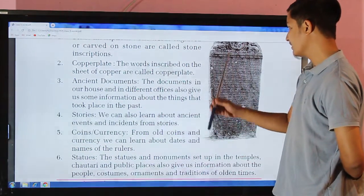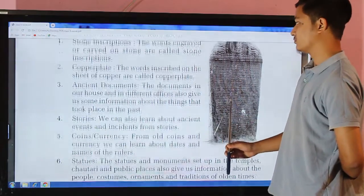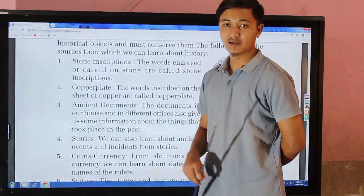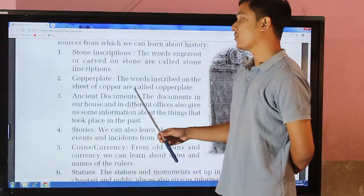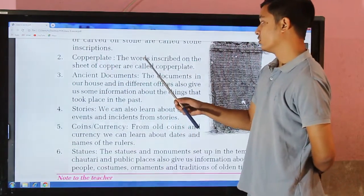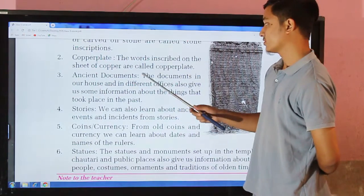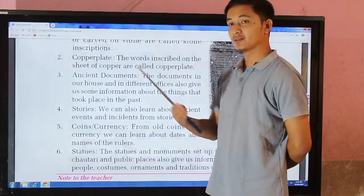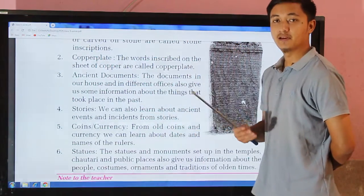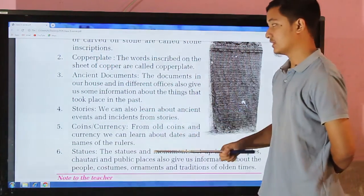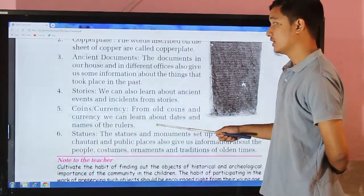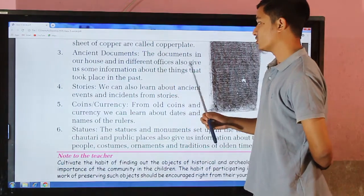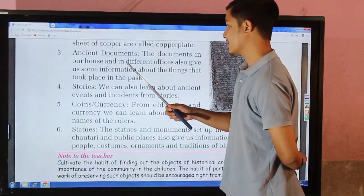The second source is copper plate inscription. The words inscribed on a sheet of copper are called copper plate inscriptions. These are ancient writings engraved onto copper plates, giving us information about the past.